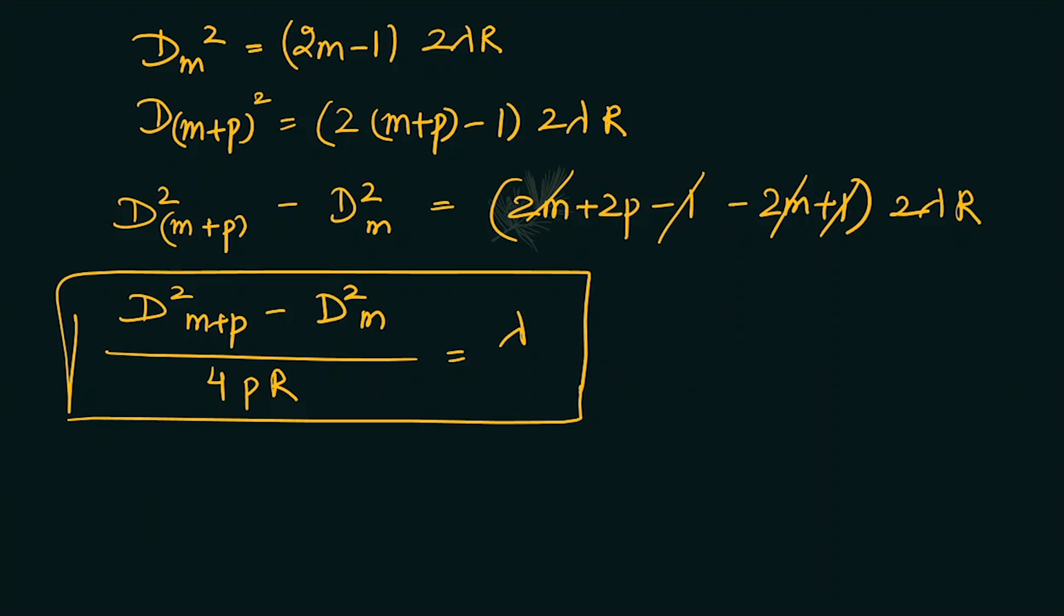In this question we are given d4, the diameter of the fourth ring, that is 0.314 centimeter, and the diameter of the 15th ring, 0.574 centimeter.